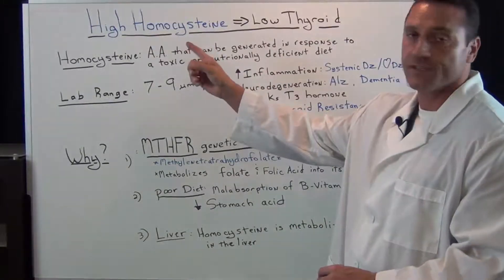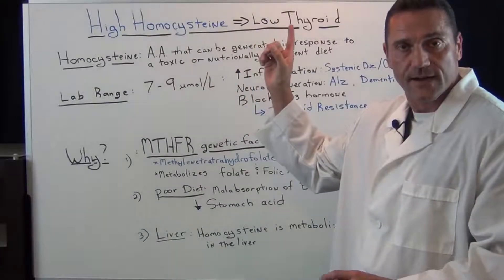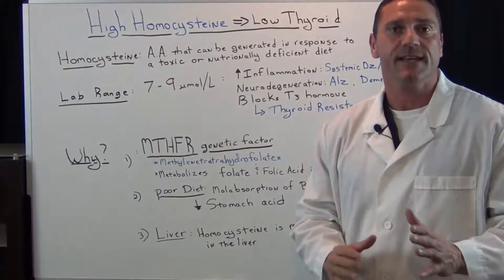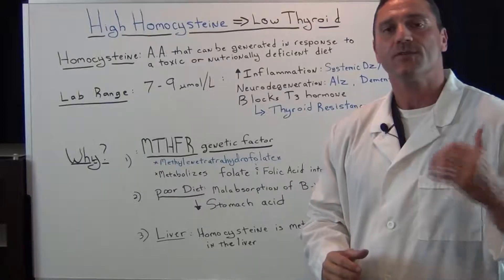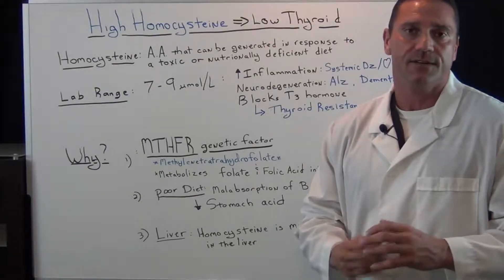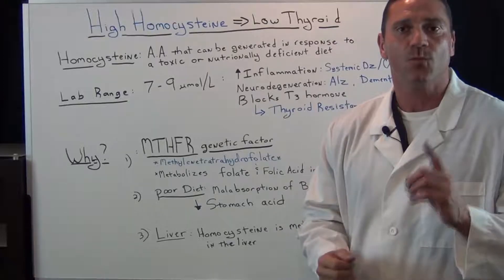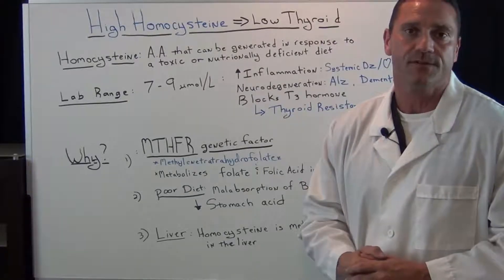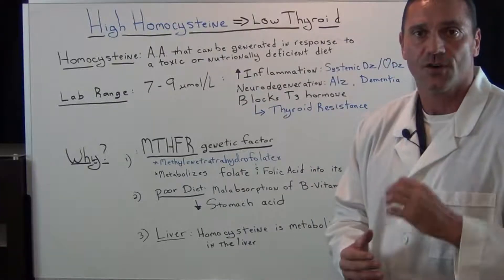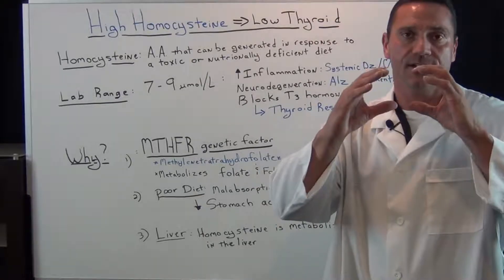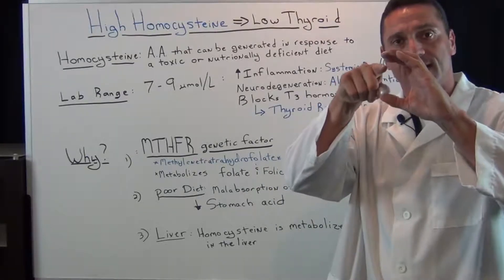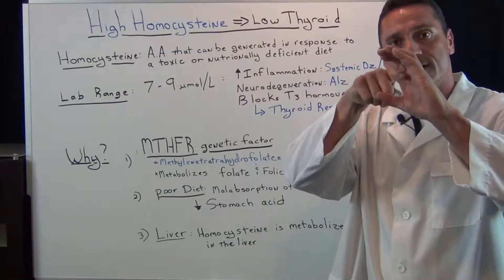High homocysteine levels in the bloodstream will affect the thyroid because homocysteine is an inflammatory marker. With the blood labs that I do, I always check for two inflammatory markers: one is C-reactive protein and the other is homocysteine levels, because homocysteine affects the endothelial lining in the arterial wall.